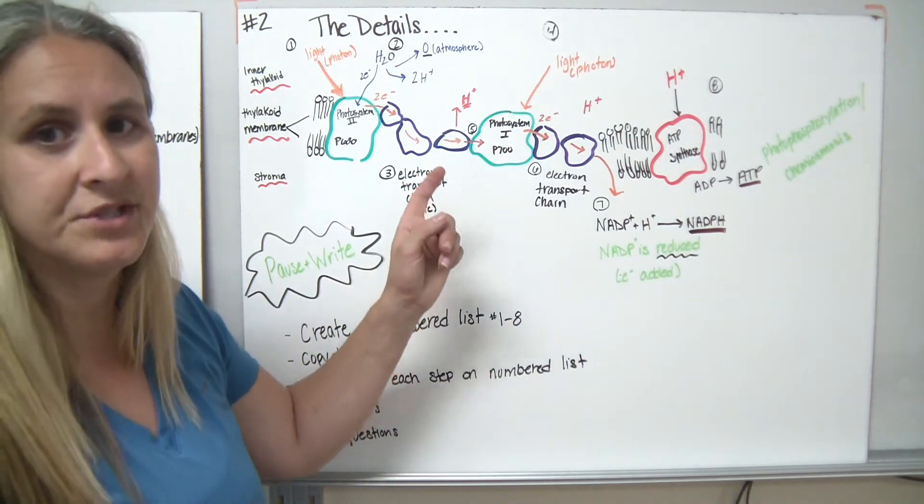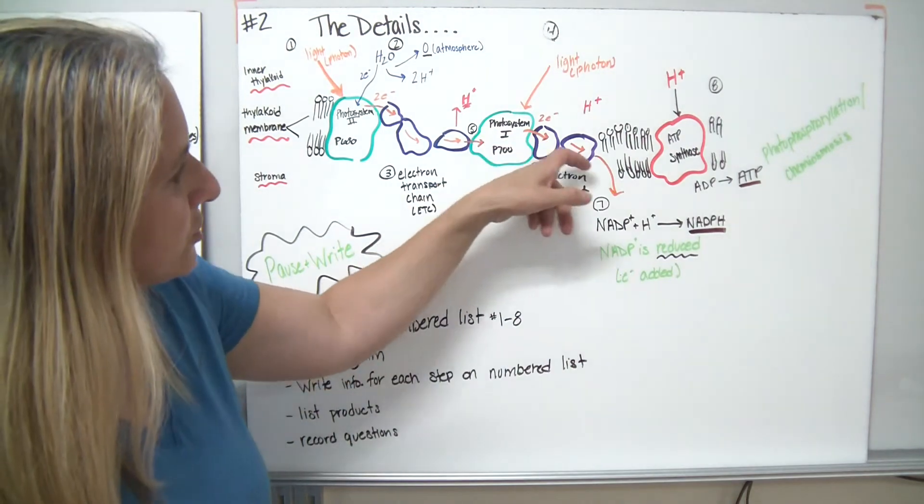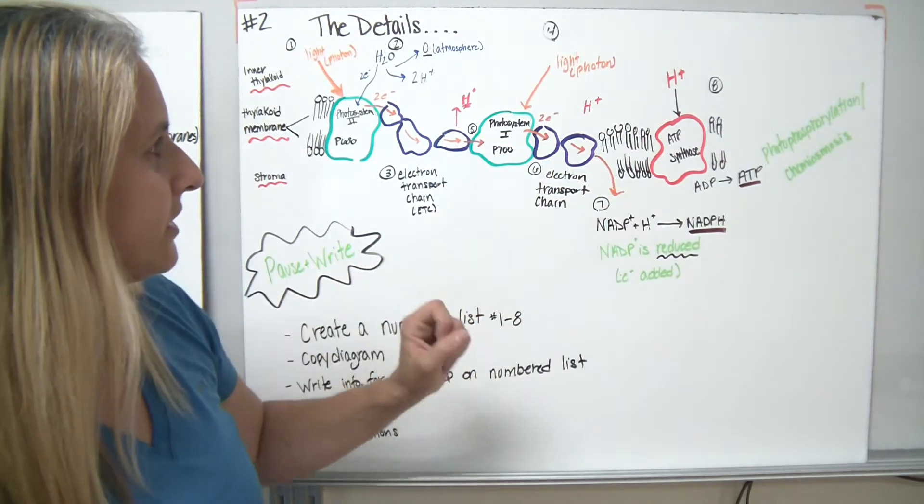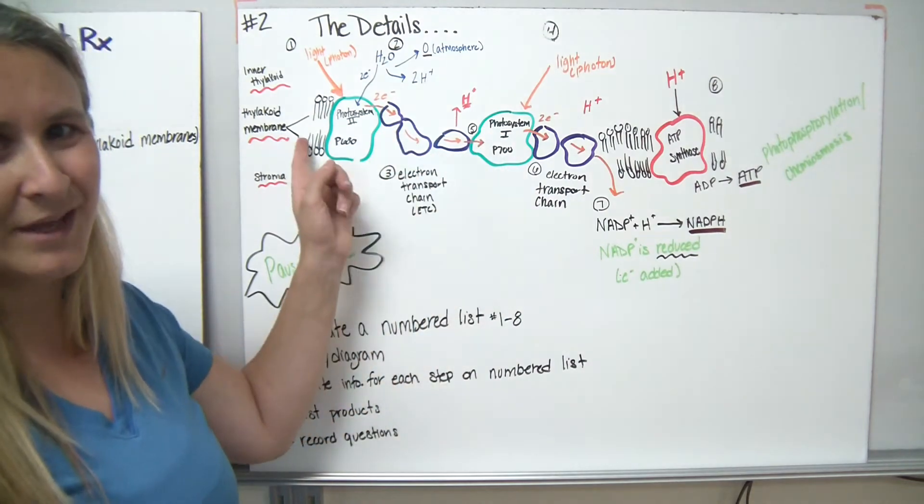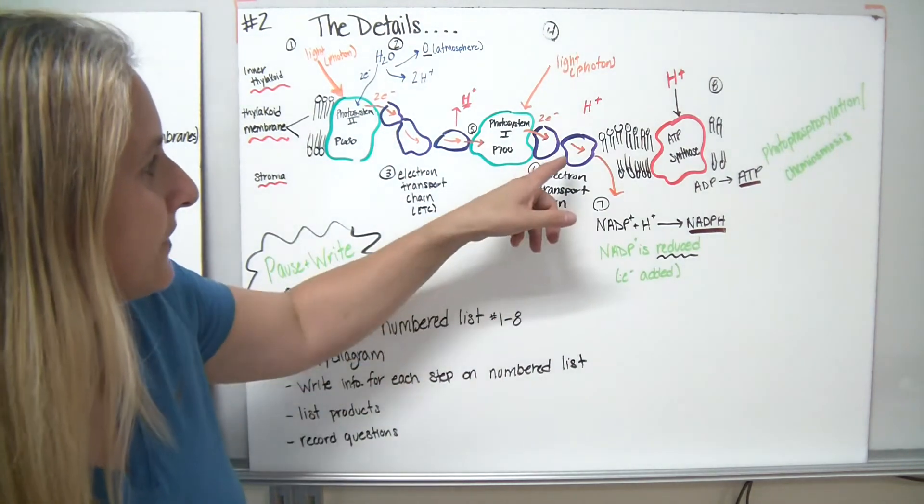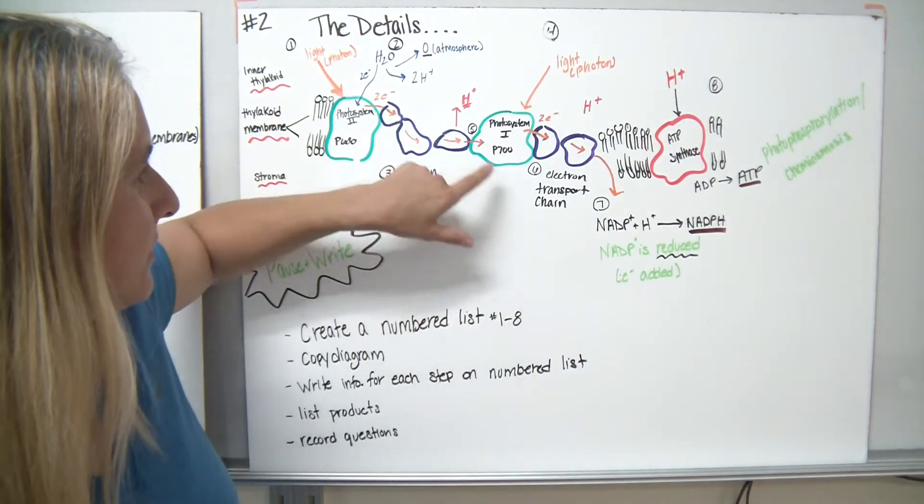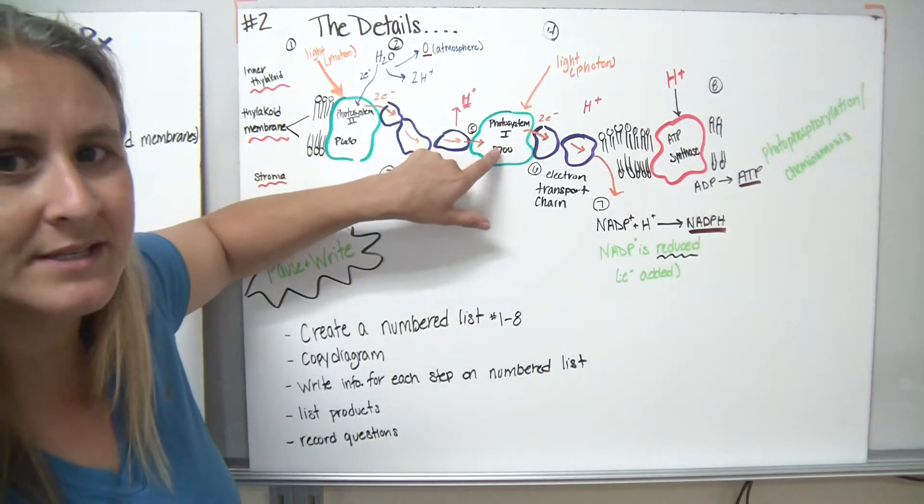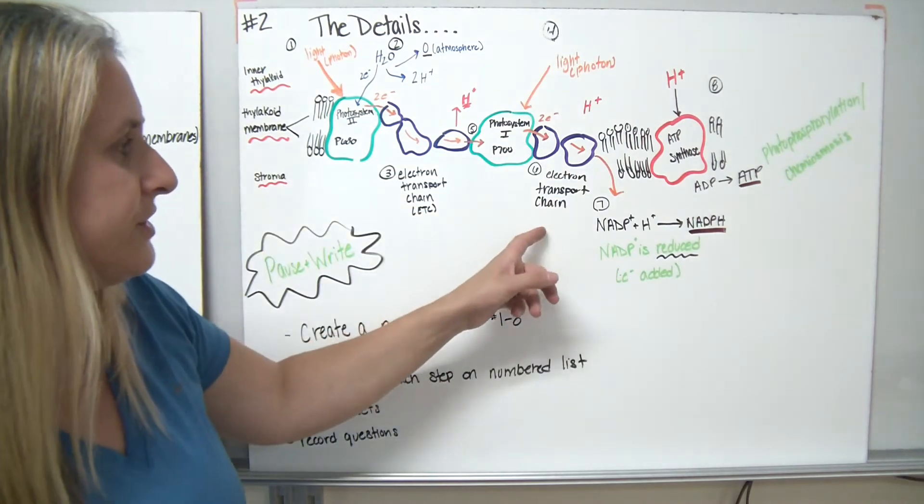More hydrogens are going to come out into this inner thylakoid area, and we're going to transfer two electrons over through the electron transport chain. They're going to be replaced by the two electrons that came from photosystem two. So now we had our photons come in for step four. We had photosystem one getting excited for step five, and then two electrons going through the electron transport chain.